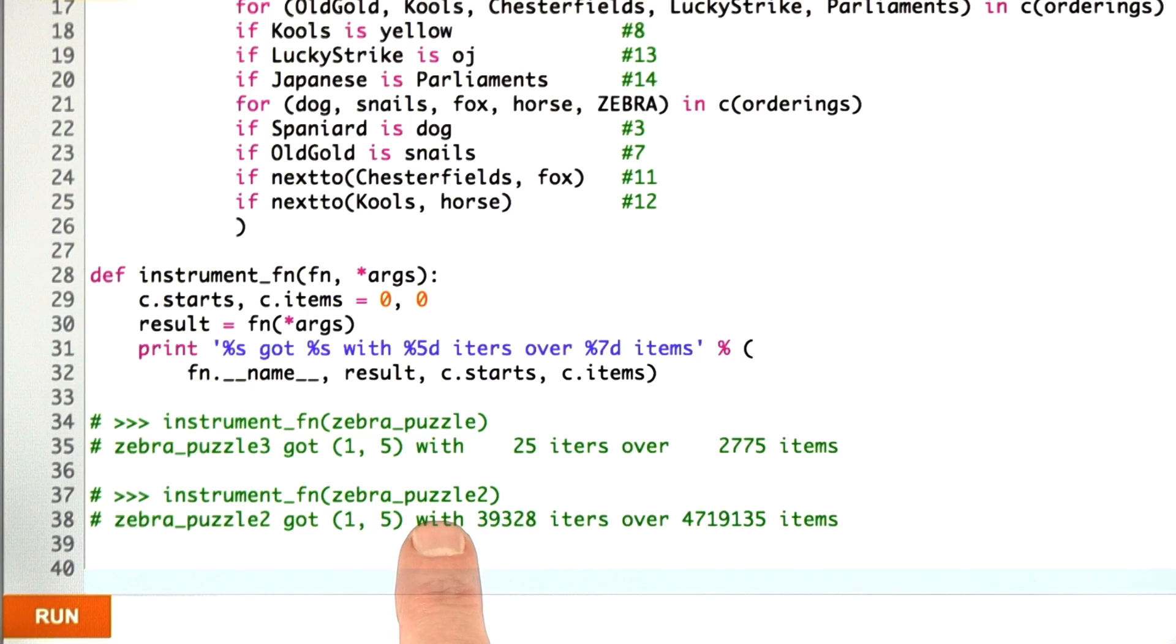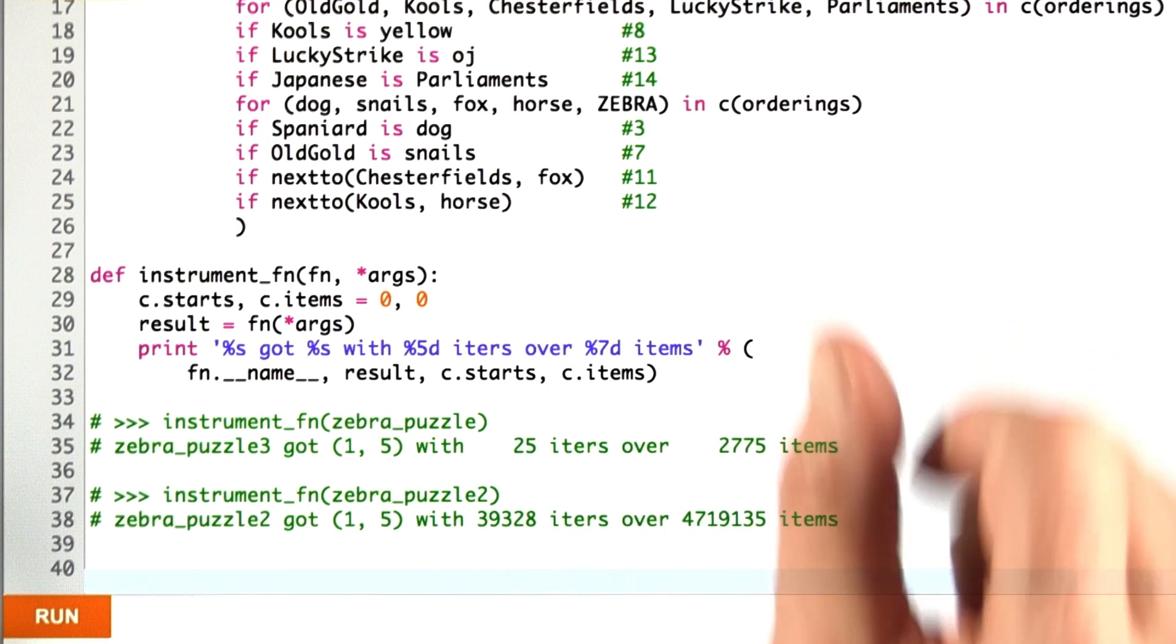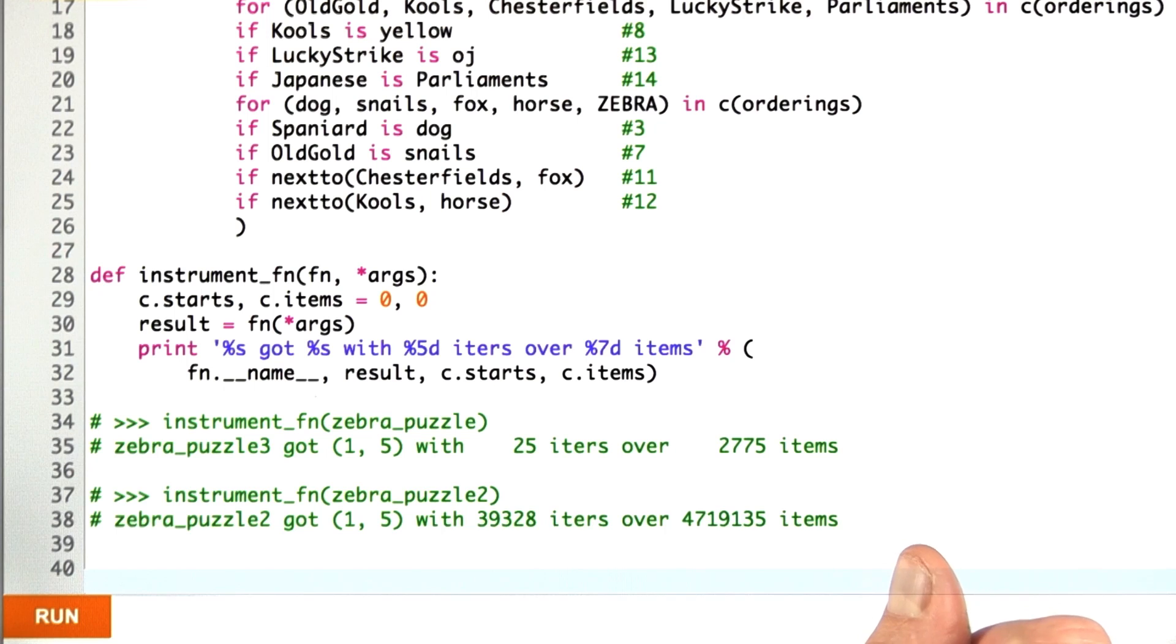Puzzle 2, this was the definition for when we took the original definition and then moved only one of the constraints up in the ordering. That gave us this number of iterations and items, and I didn't show the puzzle where none of the constraints are moved up. That would have taken even more. We see, even here, quite a reduction in the number of iterations and the counts, and this tells you how efficient we are.